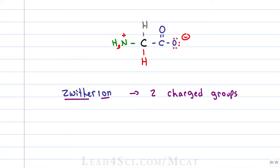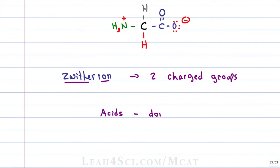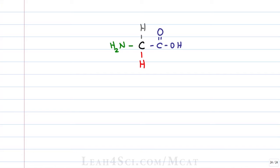Let's break this down and see how you find the charge of an amino acid at any given pH. The key is to recognize that acids will donate a proton and bases will accept or attack a proton. We have the neutral form of glycine. In order to figure out the charge, you want to start with the neutral form and then look for the pKa values. The pKa values — one for each acid or base — will tell you at which pH it's going to gain or lose a proton.